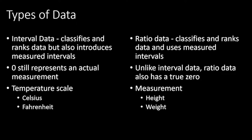Interval data classifies and ranks data, but here zero represents an actual measurement — for example, zero degrees Celsius or zero degrees Fahrenheit are actual measurements. In ratio data, however, zero is a true zero meaning no quantity exists — for example, a height of zero or weight of zero means there is no height or weight.